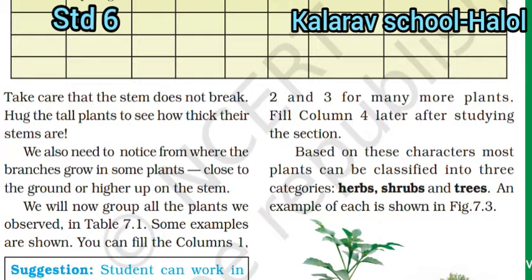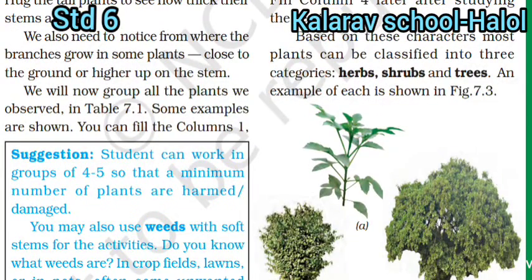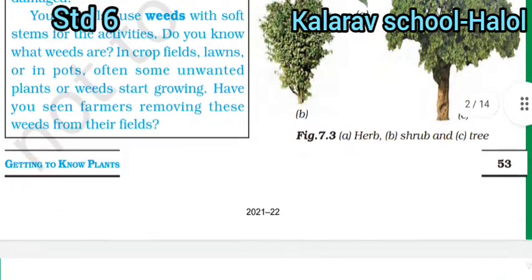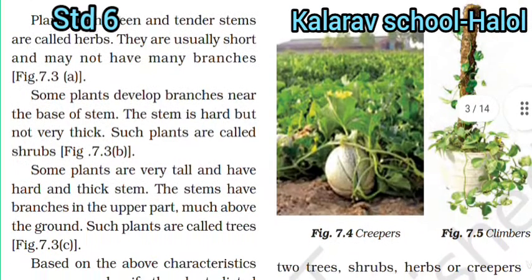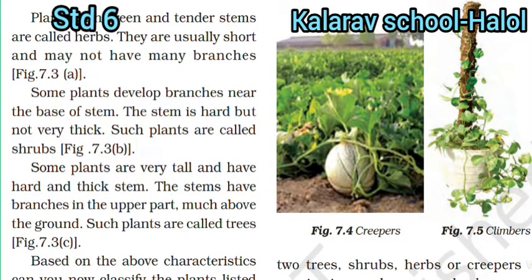Some examples are shown. Based on these characteristics, most plants can be classified into three categories: Herbs, Shrubs, and Trees. Plants with green and tender stems are called herbs. They are usually short and may not have many branches. Some plants develop branches near the base of the stem; the stem is hard but not very thick — such plants are called shrubs.